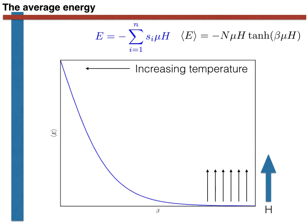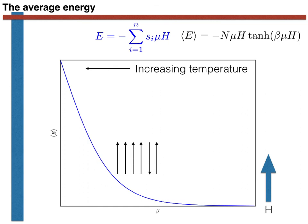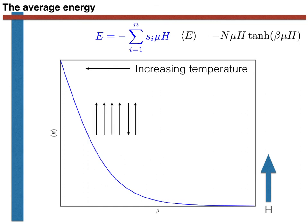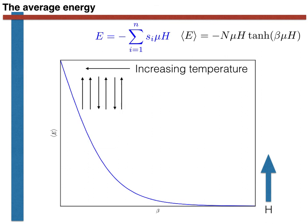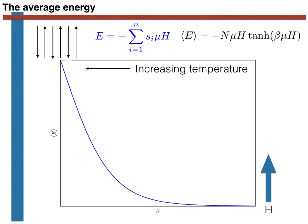The fact that the energy increases as the temperature is increased suggests that some of the spins start to flip and become aligned against the prevailing field. In the high temperature limit, when beta is equal to zero, the energy is equal to zero, suggesting that on average the number of spin-up particles equals the number of spin-down particles.